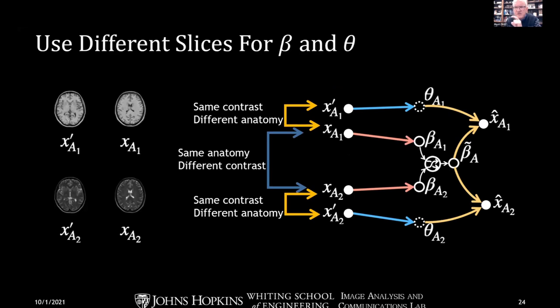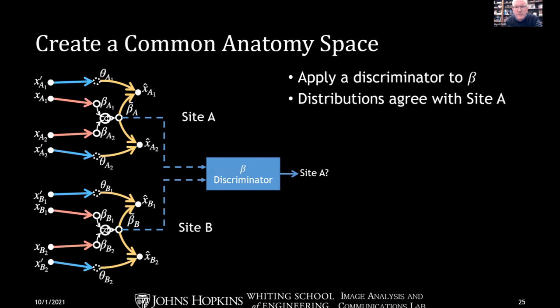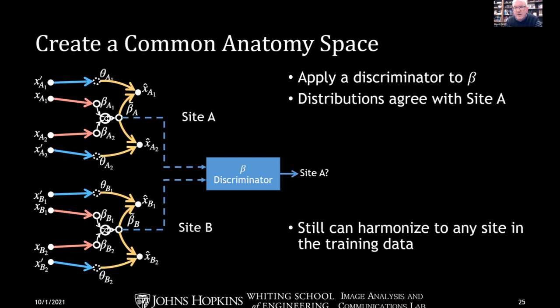The third major change was introducing a beta discriminator on the anatomy variable. With data from two sites A and B, we want to train so that the anatomy latent variable has the same distribution across sites — so site B won't learn an independent anatomy representation from site A. The beta discriminator checks whether all training sites look like the distribution of site A. This does not mean we can only harmonize to site A — we're just using this to get a common latent space, and we still retain the ability to harmonize any site to any other site within the framework.